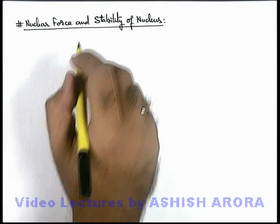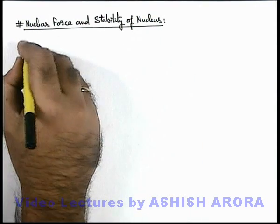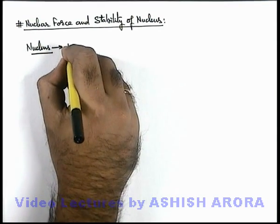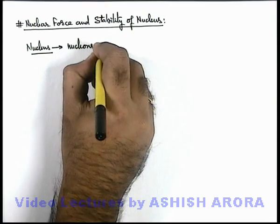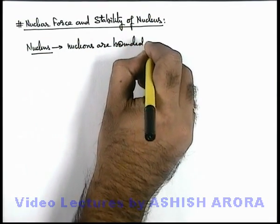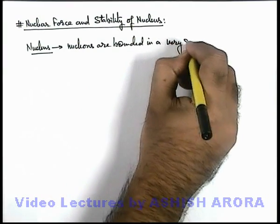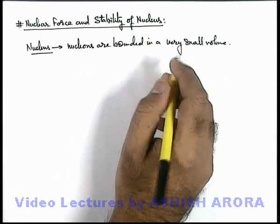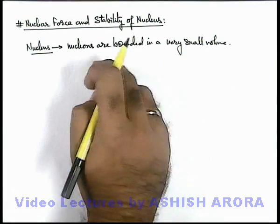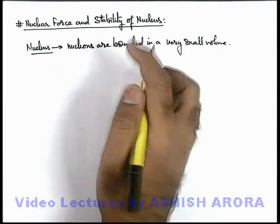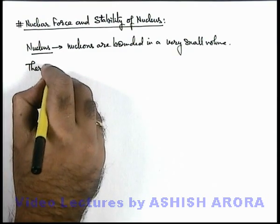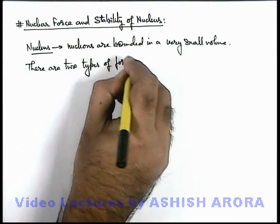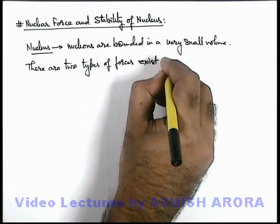Now we'll study about nuclear force and stability of nucleus. If we talk about a nucleus, we know well that inside a nucleus, nucleons are bounded in a very small volume. So if there is a collection of protons and neutrons confined within a very small volume, there must be some forces inside the nucleus. There are 2 types of forces that exist inside a nucleus.